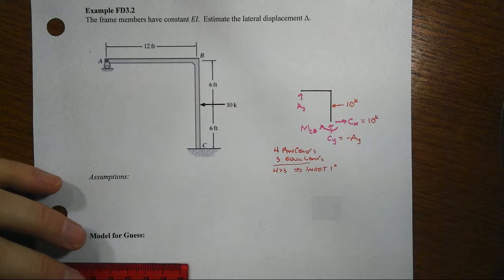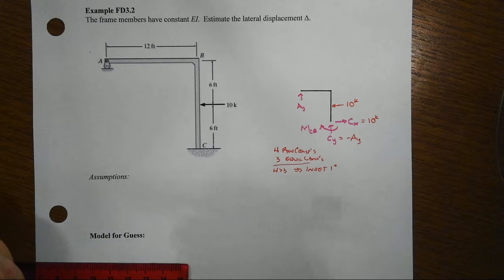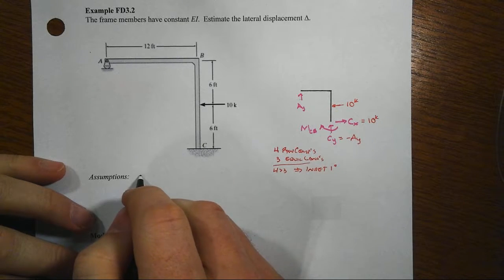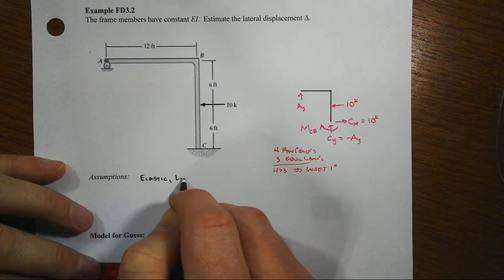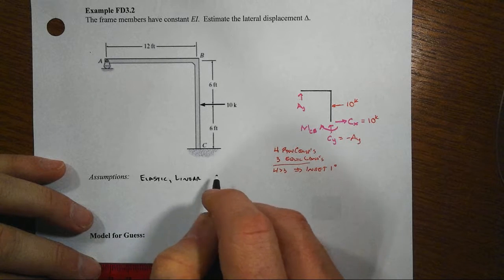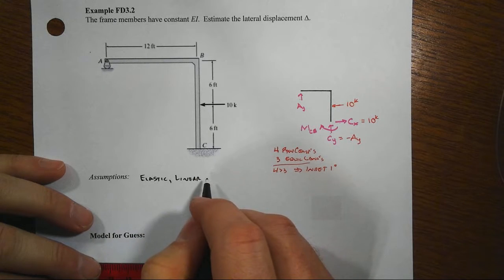Okay, so let's make a couple of assumptions before we go a whole lot further. One of them is going to be that we have elastic and that we have linear behavior. So no plastic hinges or yielding of any sort are going to form, no buckling or anything like that.